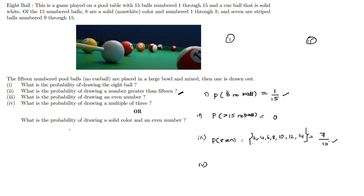Fourth question: what is the probability of drawing a multiple of 3? The multiples of 3 from 1 to 15 are: 3, 6, 9, 12, 15 — that is 5 multiples. So, the probability of drawing a multiple of 3 is 5/15, which simplifies to 1/3.